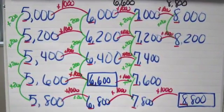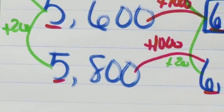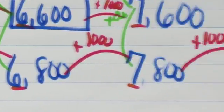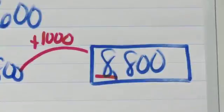Coral counting is when I set an objective for students to count by a certain number. Today the objective was for them to count by two hundreds, and then to look for patterns in those numbers.